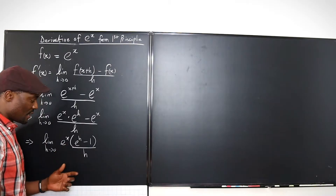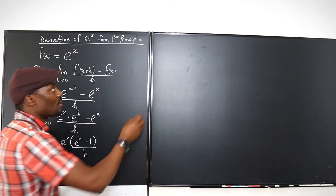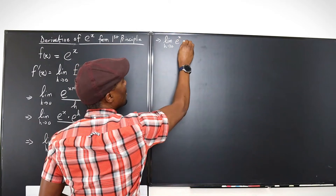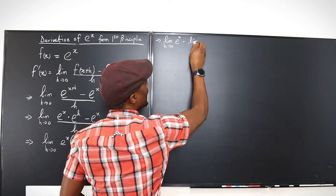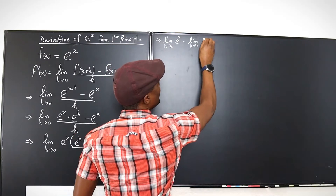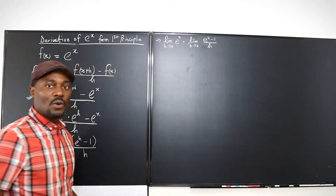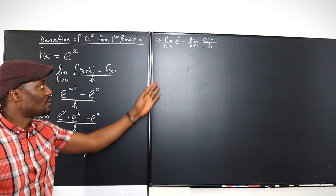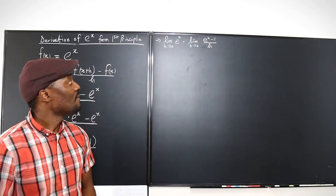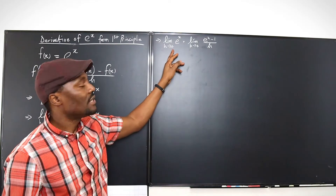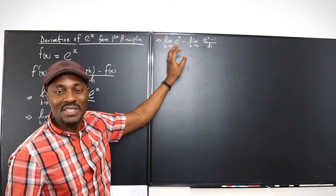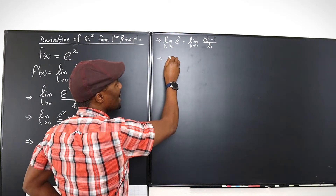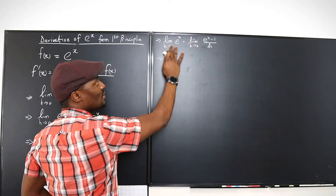I'm going to put the h just under those terms dealing with h, since e to the x is just multiplying that. We can rewrite this limit and say this implies the limit as h goes to 0 of e to the x, multiplied by the limit as h goes to 0 of e to the h minus 1 over h. That's the limit law that says the limit of a product is the product of the limits. And what is the limit of e to the x as h goes to 0? Since e to the x contains no h, it is not affected — it stays.